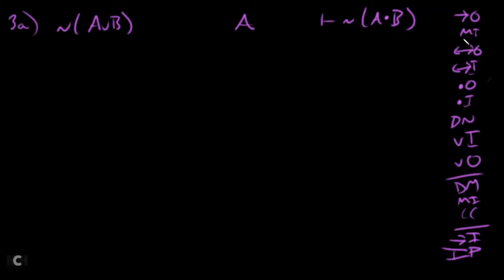Can I do arrow out? Can I do modus tollens? Can I do double arrow out or in? Can I do and out, and in, double negation, wedge in, wedge out? These are all 'can and shoulds.' And then there are emergency scenarios — like if I can't do any of the above, I can go for an arrow in, or provisionally assume the opposite of my goal.